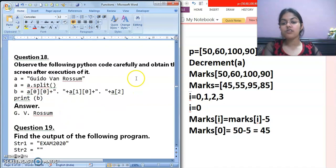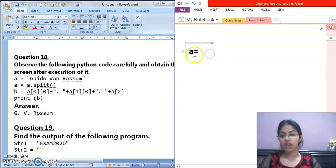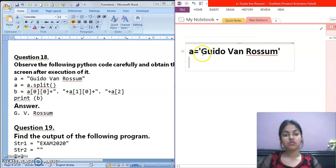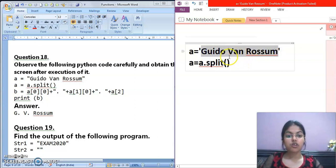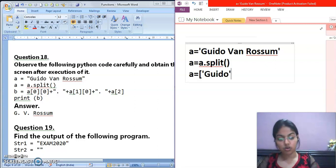This question we can do now. Observe the following python code carefully and obtain the screen after execution of it. Now see here, you are given one variable A. In that what value? Guido Van Rossum. If you remember this, this is the name of the developer also of python language. Python language was developed by this person and his name is Guido Van Rossum. Now after that next statement, A equals to A.split function. What does split function do? It will split this. By default delimiter kya hota hai? Where space is there, it will split the string. So now A will become a list, in that first position will be Guido, second position will be Van, and third position will be Rossum.